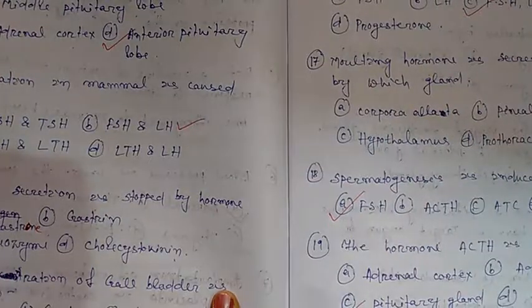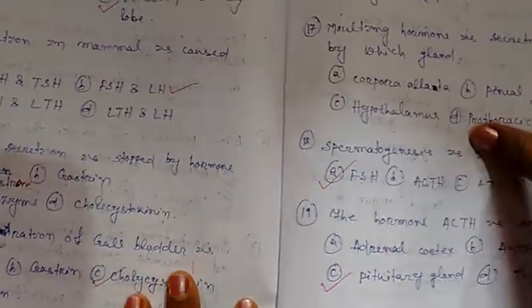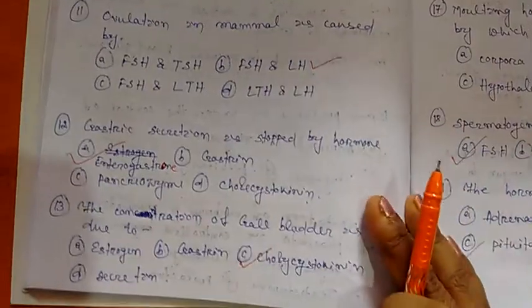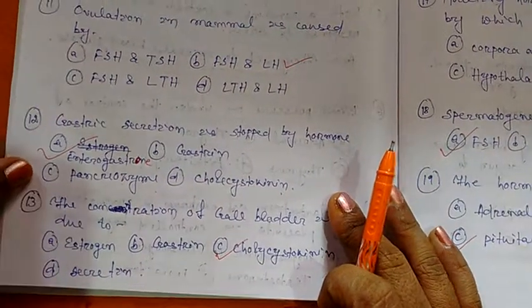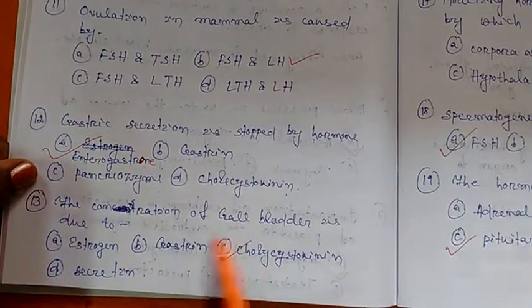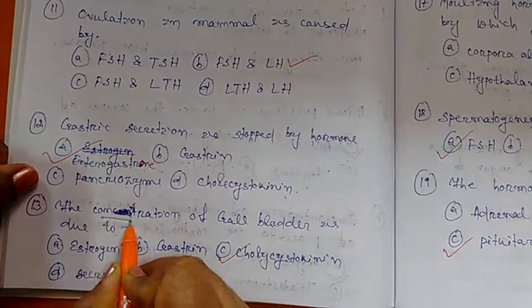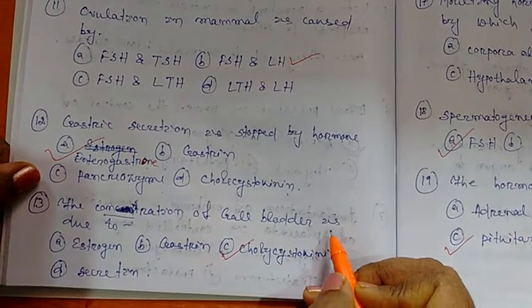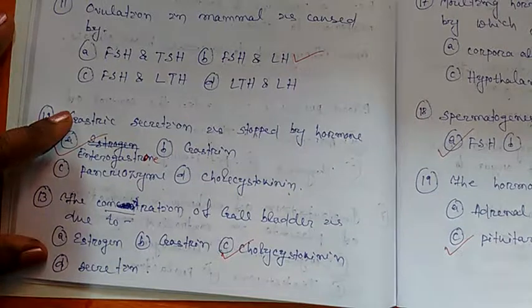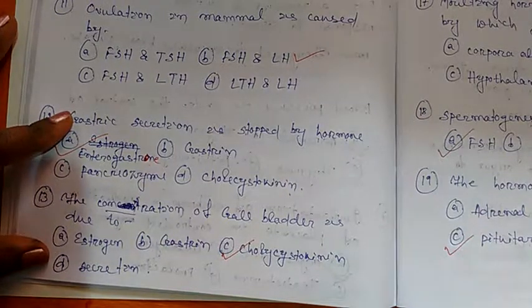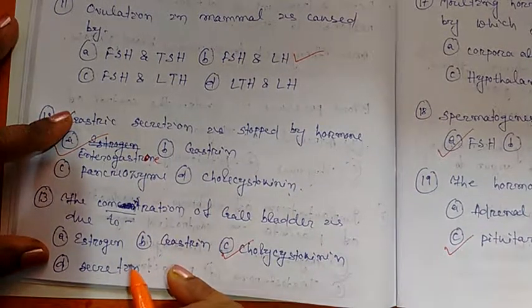Next, question number 13. The contraction of gallbladder, which is present in the liver, is due to, there are four options.